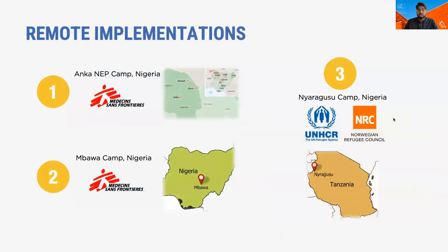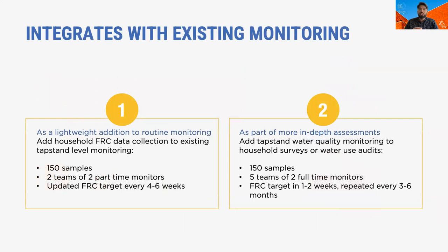In addition to the proof-of-concept trial in Bangladesh, we also carried out remote implementations in Nigeria and Tanzania with MSF, UNHCR, and NRC. At these sites, we worked remotely with implementing partner teams to help them adapt their water quality monitoring programs to work with the SWOT and to generate FRC target recommendations for each site. These remote trials taught us a lot about how we can improve the usability and functionality of the tool, as well as how we can support field teams to independently use the SWOT to improve water quality monitoring practices and water safety in their projects. Through these implementation experiences, we found that there are different ways the SWOT can fit into existing monitoring programs.